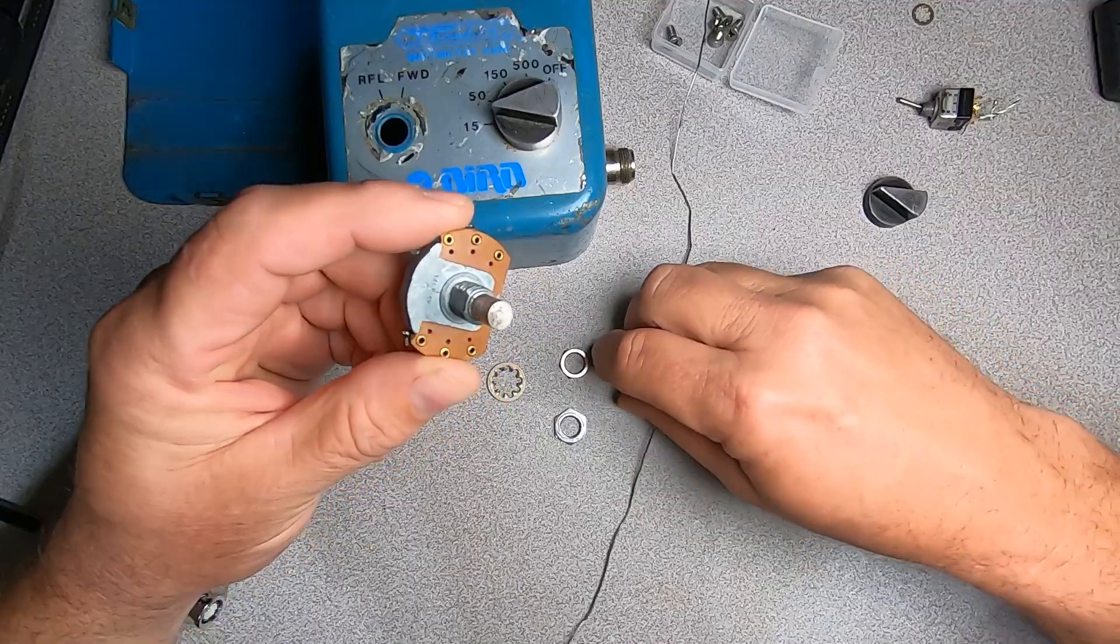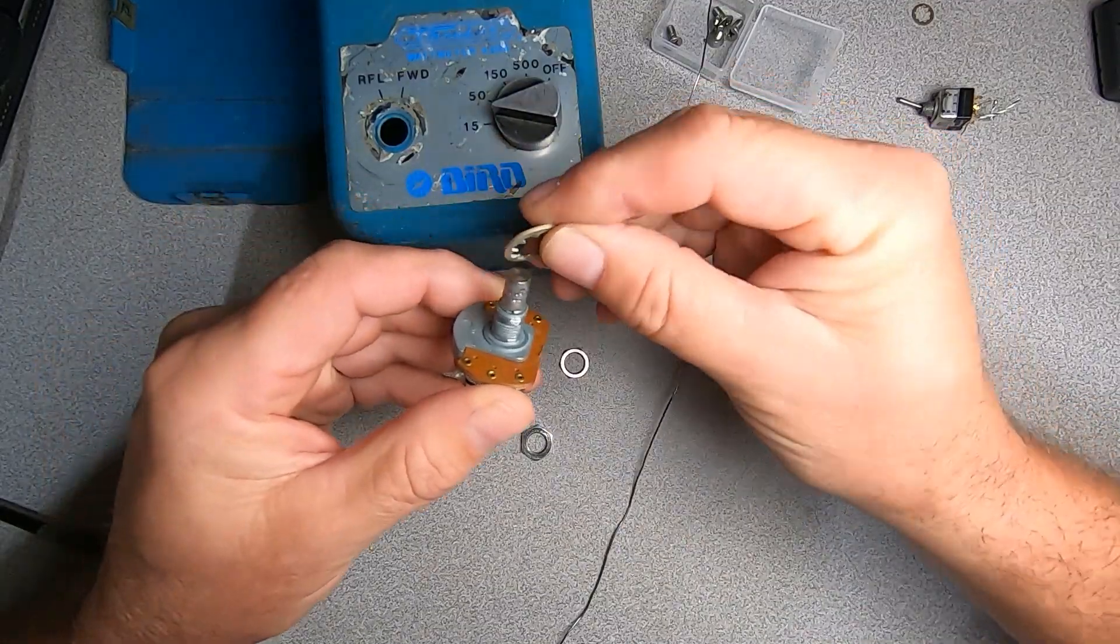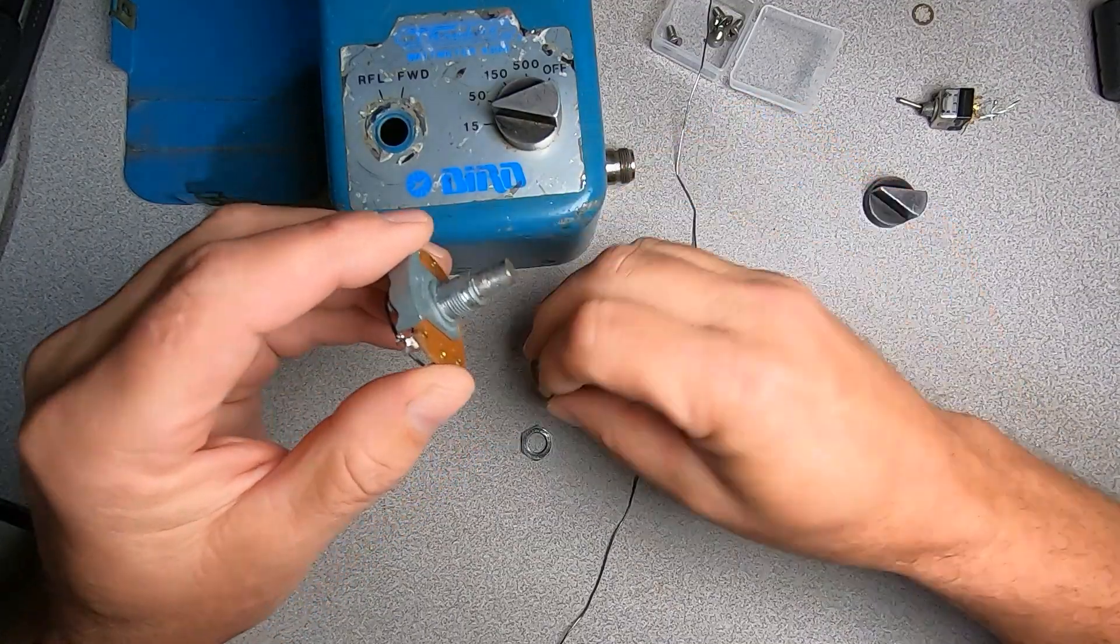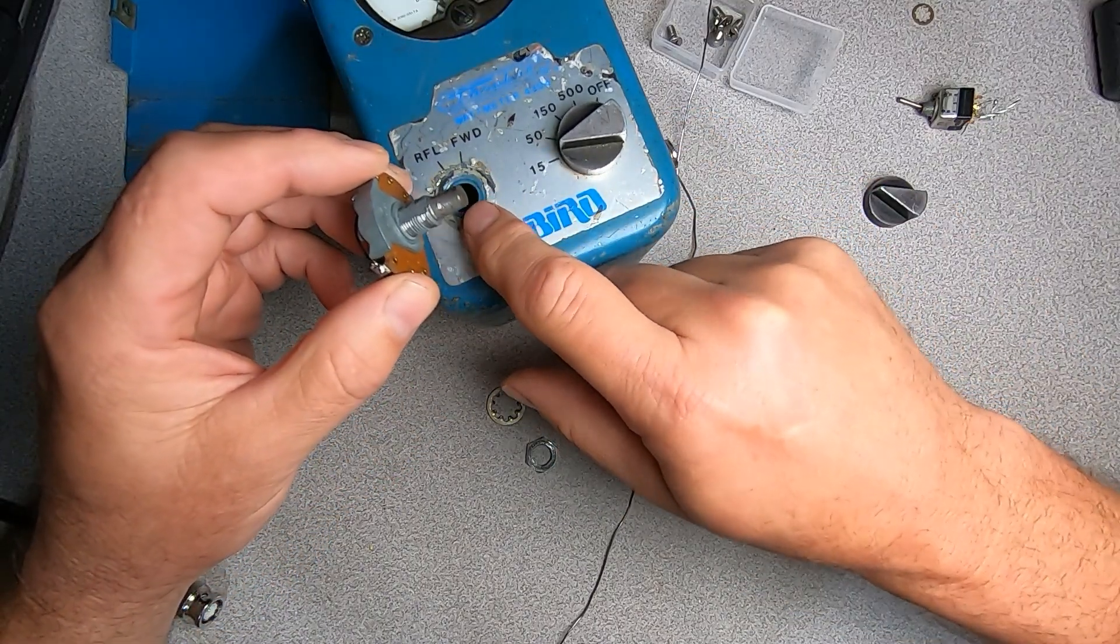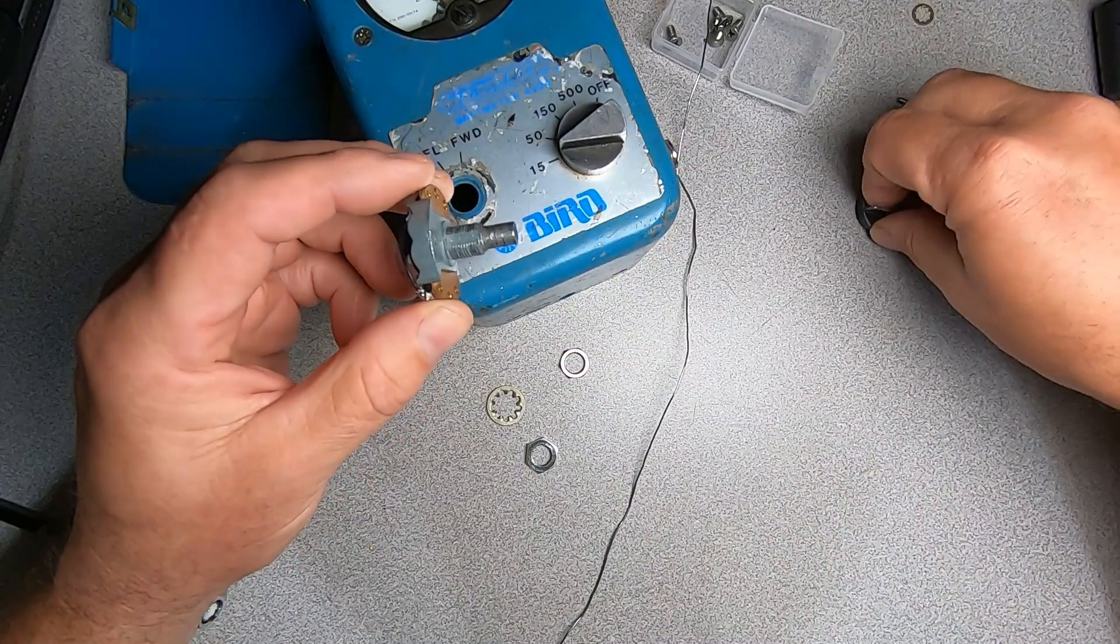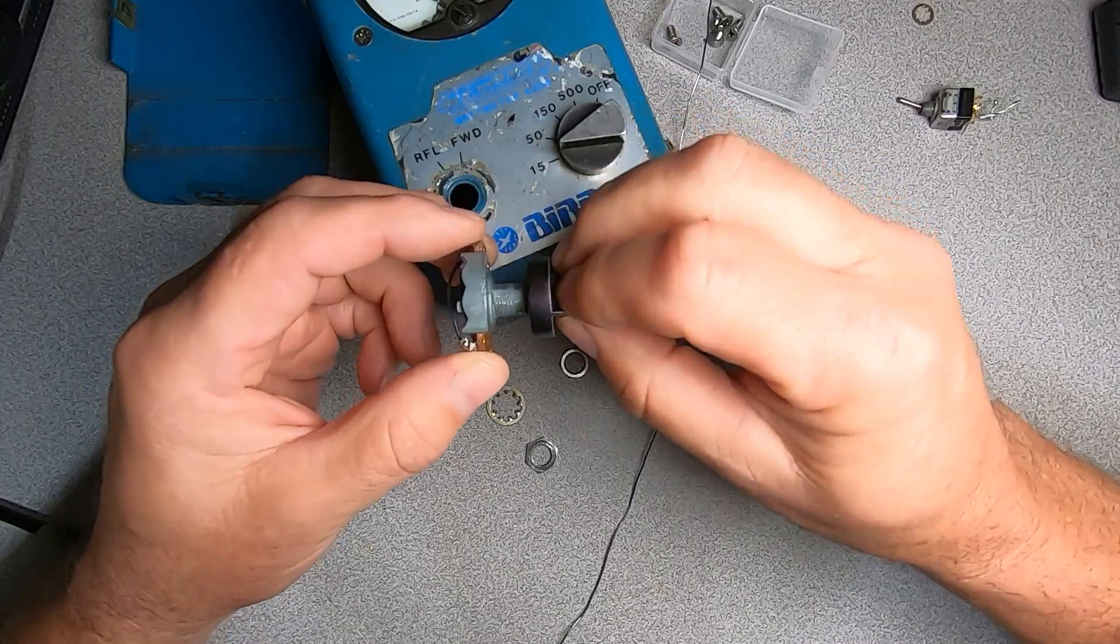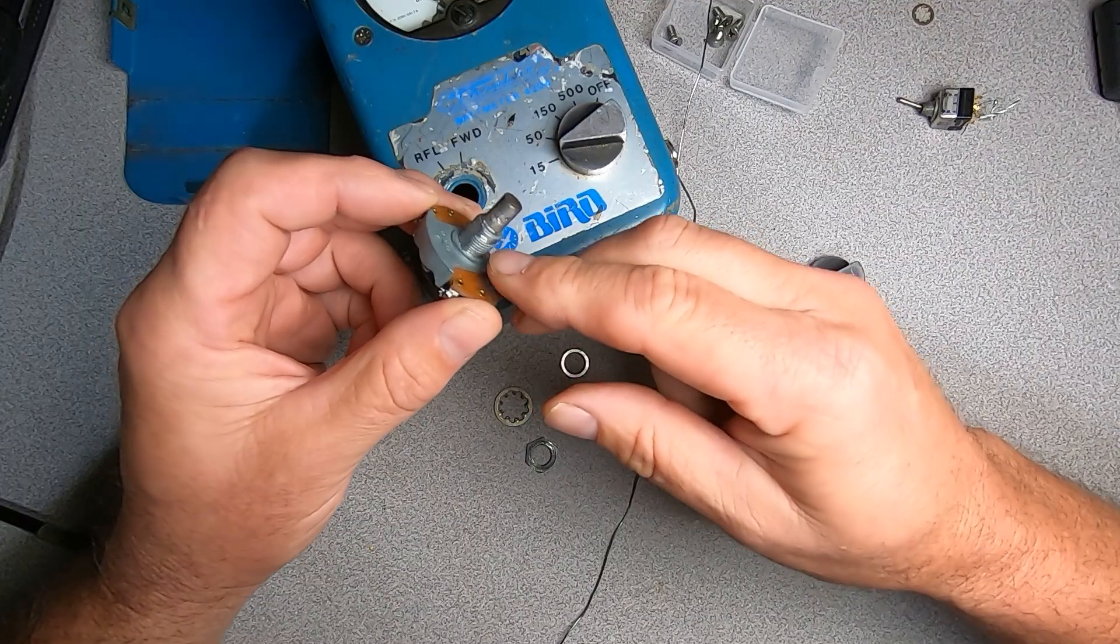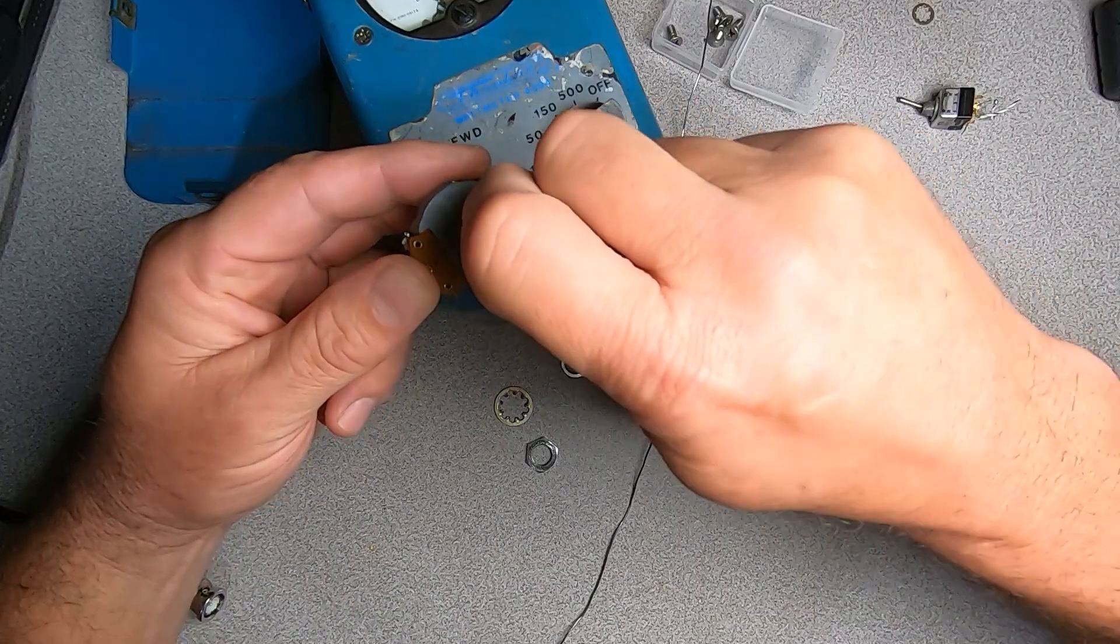So whoever owned this particular meter in the past had stacked a nut on the switch and then attempted to use an inside tooth star lock and then tighten this up enough to allow the star lock to bite on the body of the meter itself to inhibit rotation. And what they found is that it may work for a short period of time, but this positive action of the switch is working against it and you cannot apply enough torque to this threaded section of the switch body to hold this switch in place and prevent its rotation.